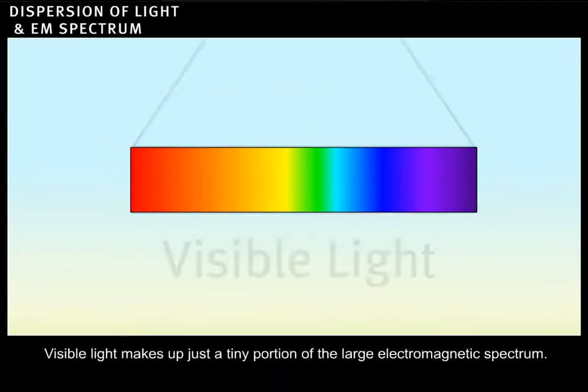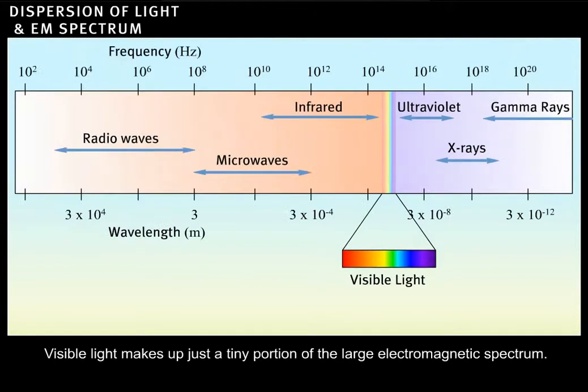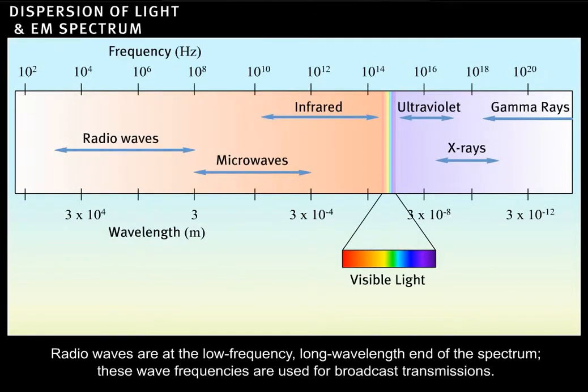Visible light makes up just a tiny portion of the large electromagnetic spectrum. Radio waves are at the low-frequency, long-wavelength end of the spectrum.